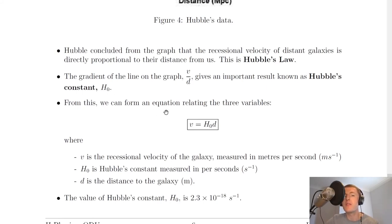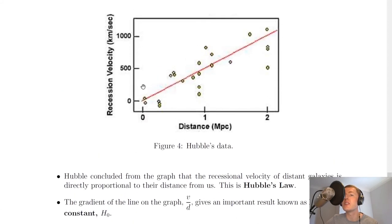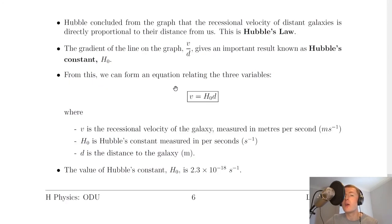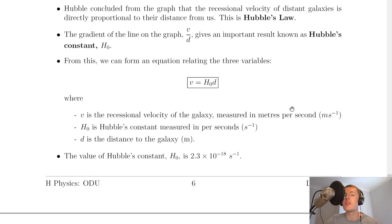From this we can form an equation relating the three variables. So because the gradient of the line there is V over D but is also H0 then we can write H0 equals V over D or in other words V equals H0 times D. So this is your equation for Hubble's law where V is the recessional velocity of the galaxy measured in meters per second.